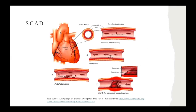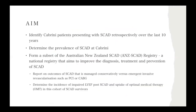SCAD is a non-atherosclerotic cause of AMI. The pathophysiological process involves a disruption in the coronary artery walls — either a tear or bleeding from the vasa vasorum — causing the intima to separate from the other layers. An intramural hematoma is formed, a false lumen is created, and this can lead to occlusion of the coronary artery. The aim of our study is to identify Cabrini patients presenting with SCAD retrospectively over the last 10 years and determine the prevalence of SCAD at Cabrini, forming a subset of the Australian New Zealand SCAD registry — the ANSCAD registry — which aims to improve diagnosis, treatment, and prevention of SCAD.